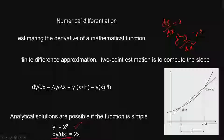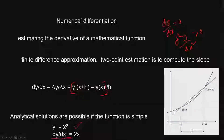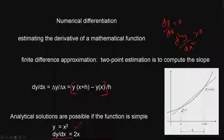Estimating the derivative of a mathematical function is called finite difference approximation. The simplest one is a 2-point estimation to compute the slope. dy/dx is approximated to Δy/Δx, which equals [y(x+h) − y(x)] / h. Here h is the small distance. You estimate the function y at x+h, then at x, take the difference and divide by h. That is the slope — this distance divided by this distance — approximated to the slope at that point.